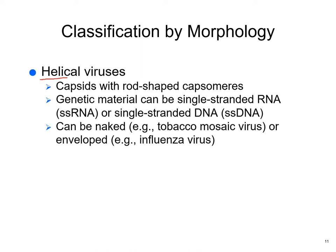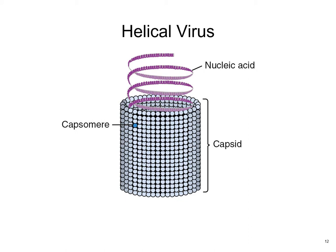Helical viruses have rod-shaped capsomeres and can contain a single strand of RNA or DNA. They can be naked — like the tobacco mosaic virus — or enveloped, like the influenza virus. The nucleic acid winds around in a helical shape with capsid and individual capsomeres visible. You can see why they call it helical.